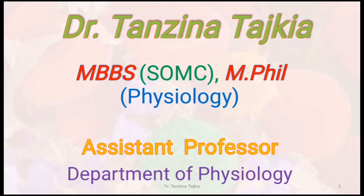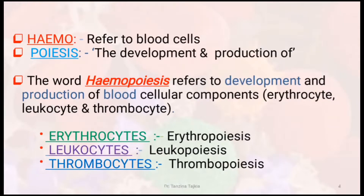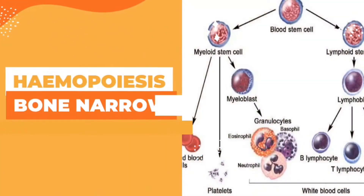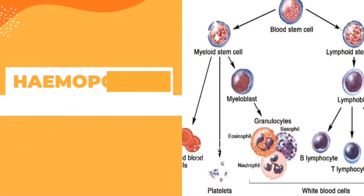Bismillahirrahmanirrahim. In my previous lecture, I discussed about the introduction of the blood. I already discussed what are the form elements of our blood — these are erythrocytes, leukocytes, and thrombocytes. Now I will discuss about the development and production, which is called hemopoiesis.